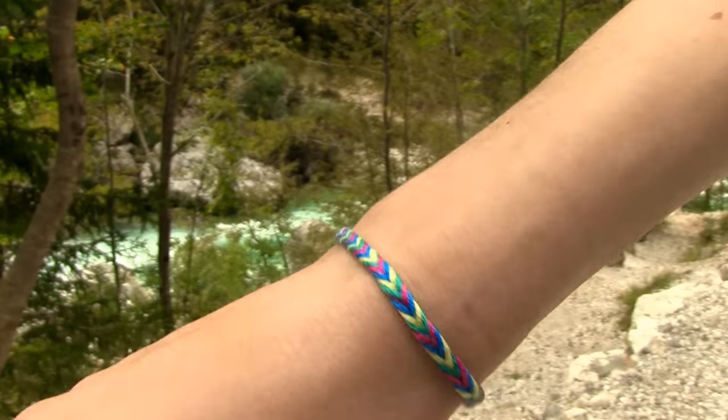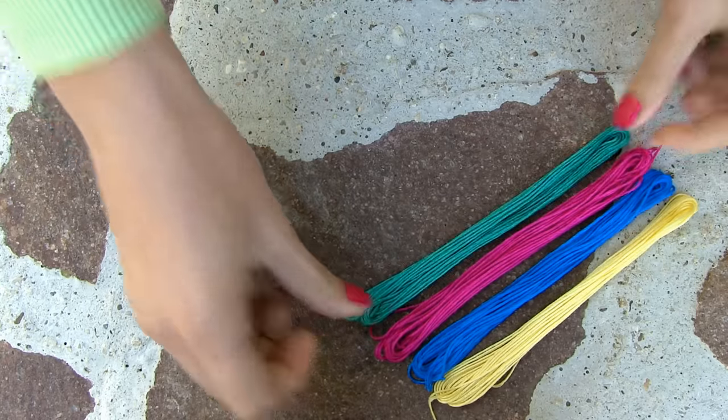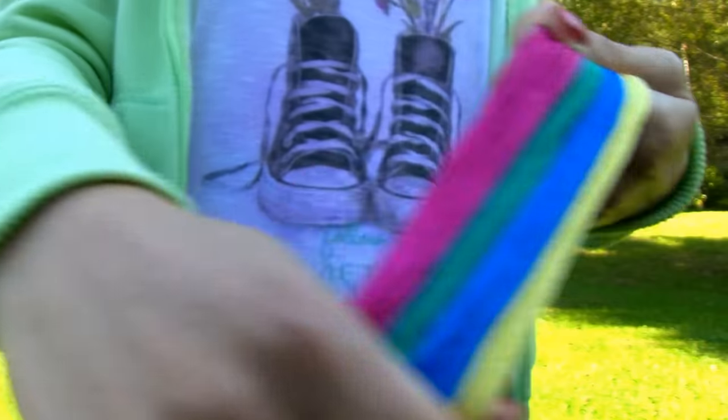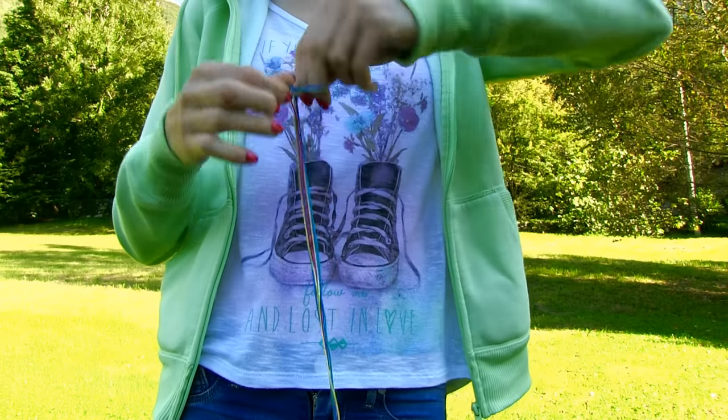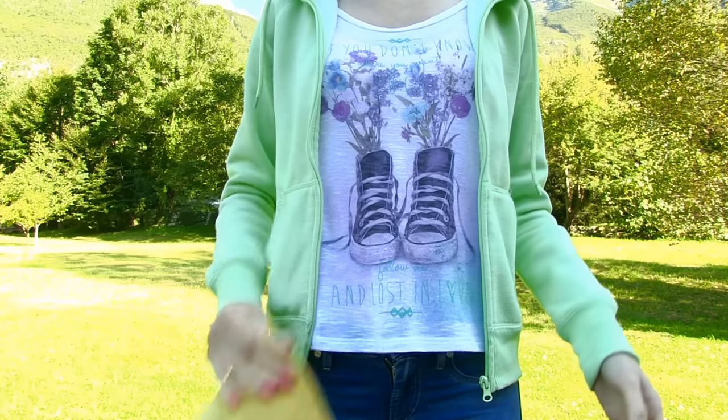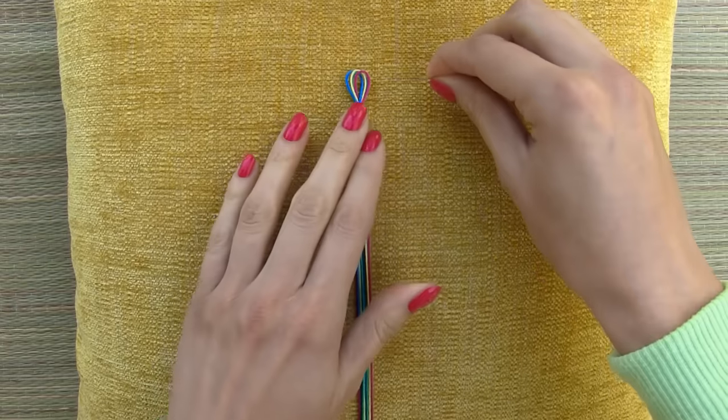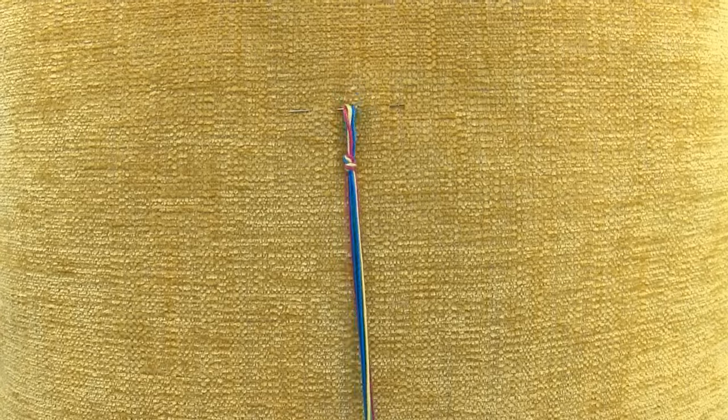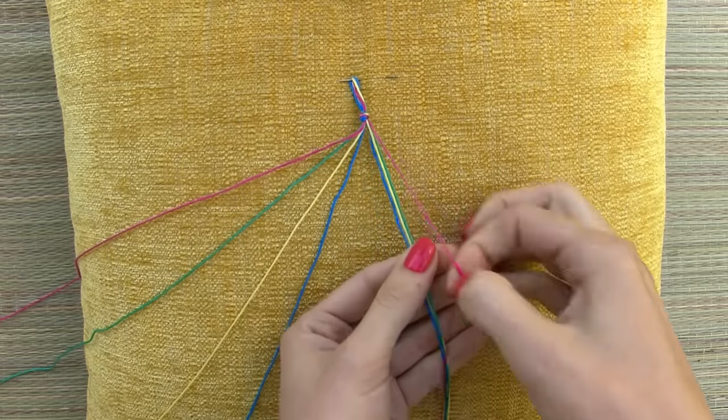Now let's make this lovely fishtail bracelet. We are going to need four string colors, scissors, a button and a needle. Cut 40 inch long thread of each color, fold the threads in half and make a knot. I decided to make this bracelet on a pillow. Pin the threads in place using a needle by going through the pillow and the loop like so. Separate the threads into two sets, one of each color on each side. Arrange the threads in a mirror image pattern.